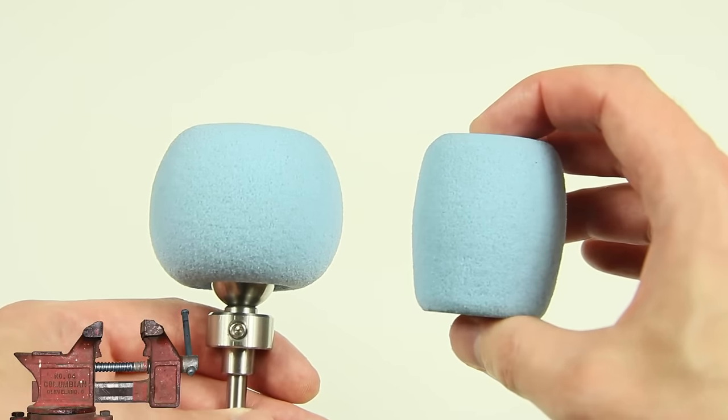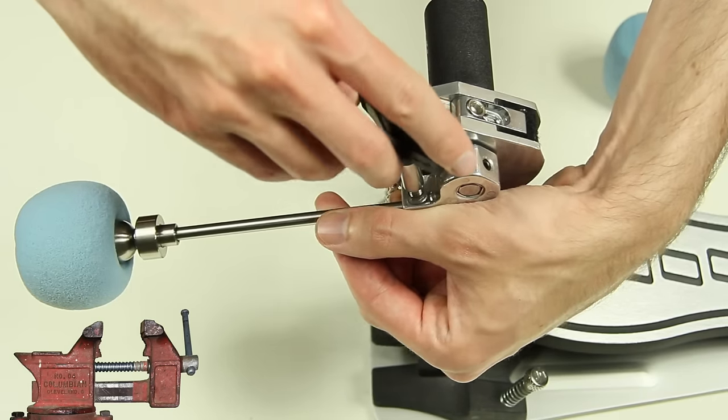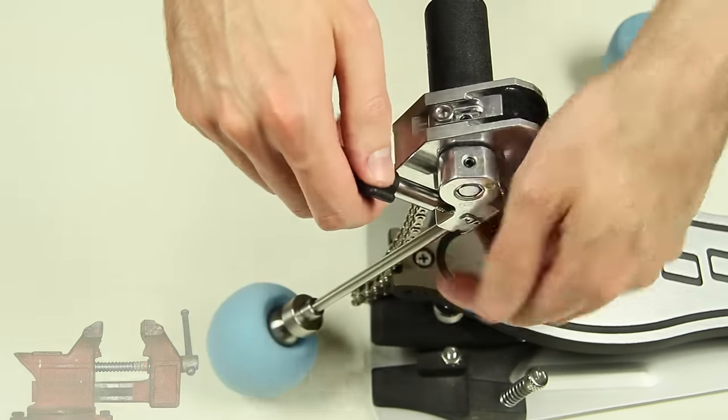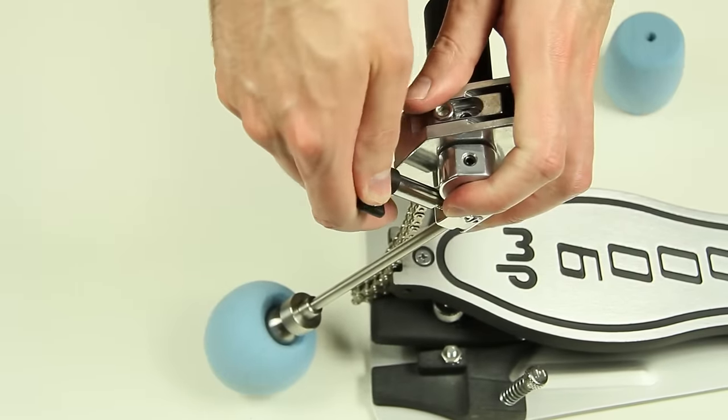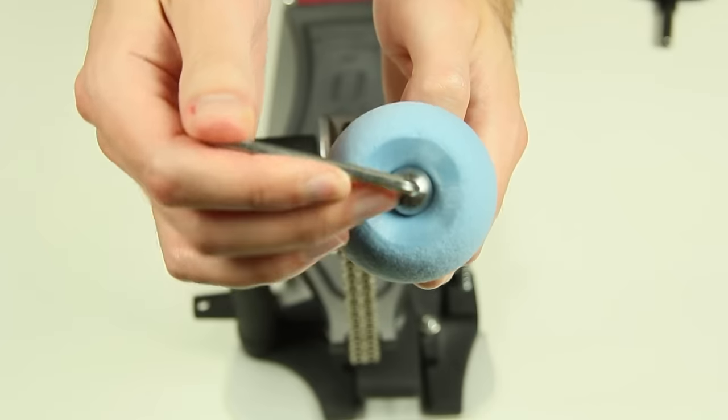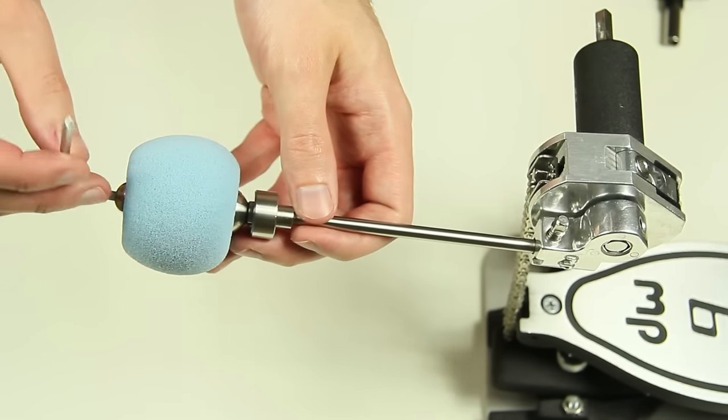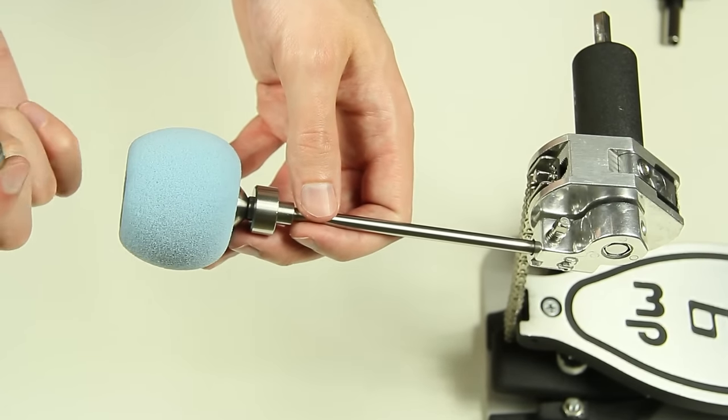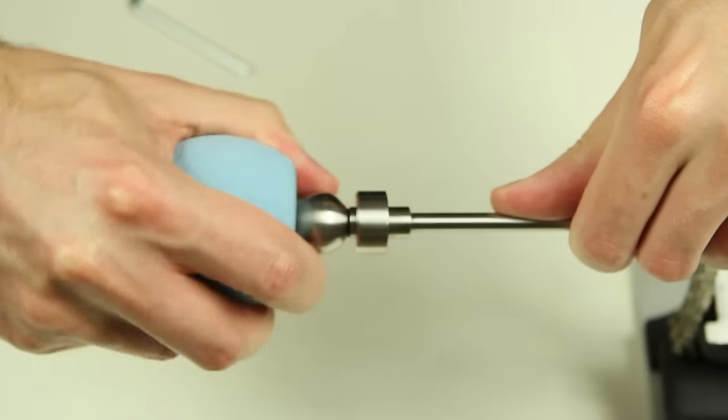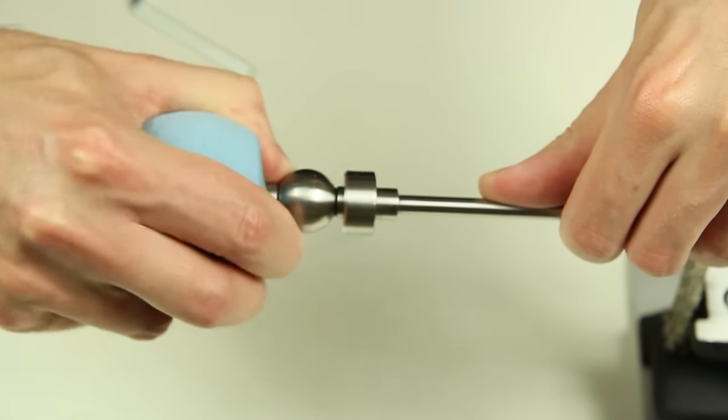R-Drums recommends using a vise, but we use a bass drum pedal as improvisation. The top nut needs to be removed with one of the wrenches. The foam is pressed onto the rod and hardly removable.